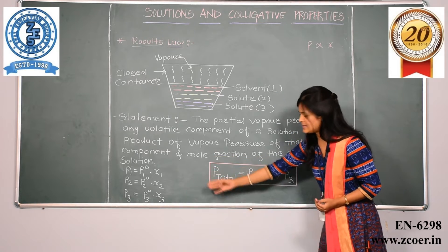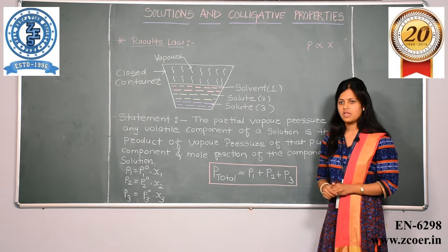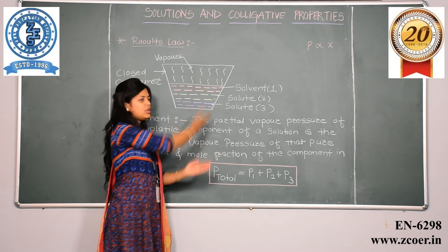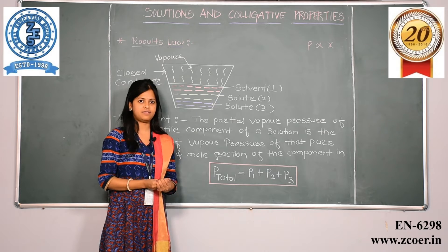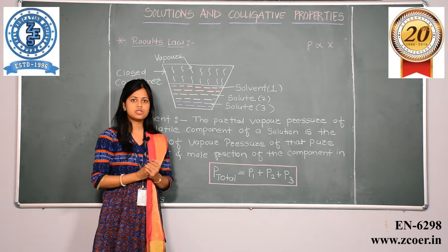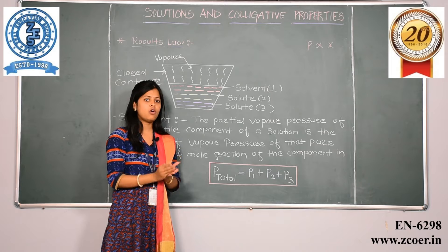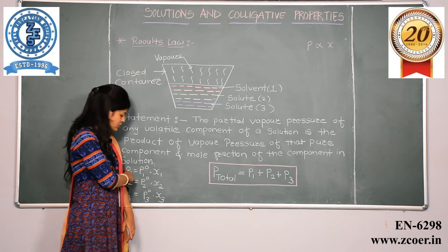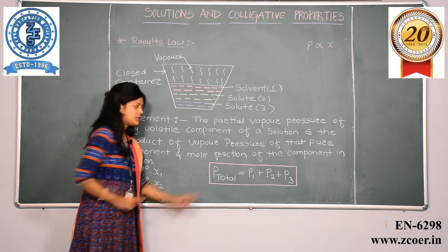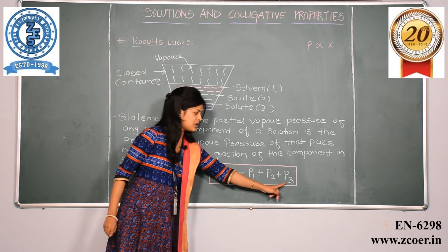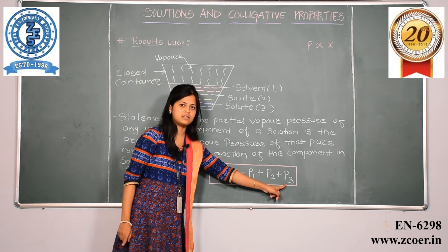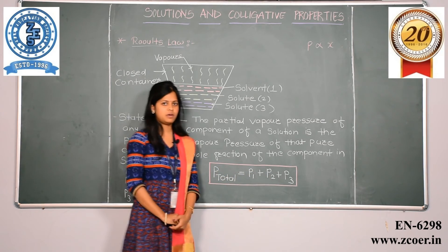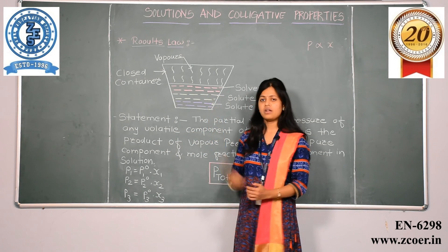So we have seen these three examples of Raoult's Law. Using Dalton's Law, we can calculate the total vapour pressure of the solution. The total vapour pressure equals the sum of the partial pressures of each component — P1 plus P2 plus P3. This gives us the total vapour pressure of the solution.